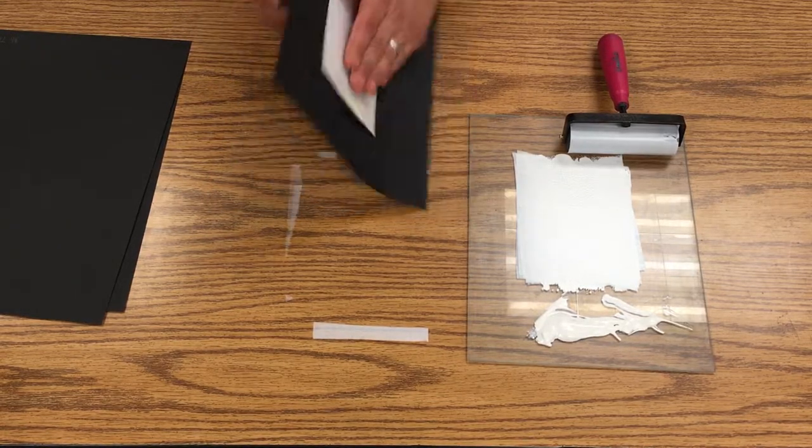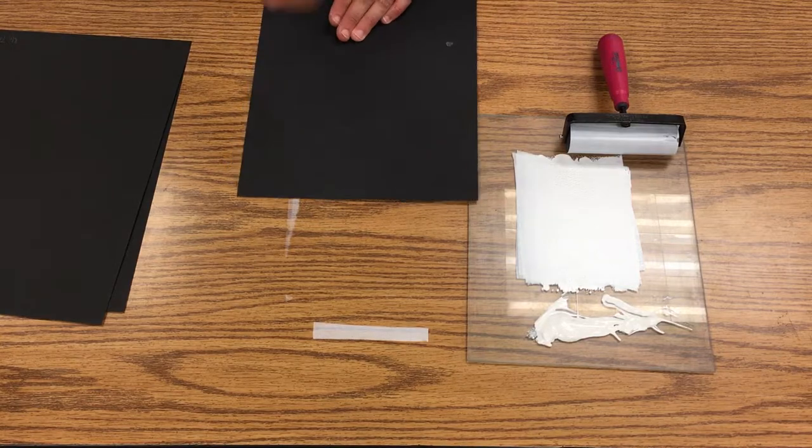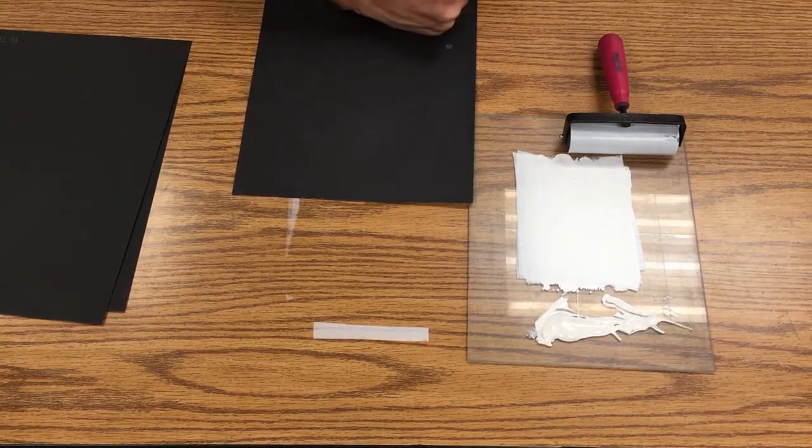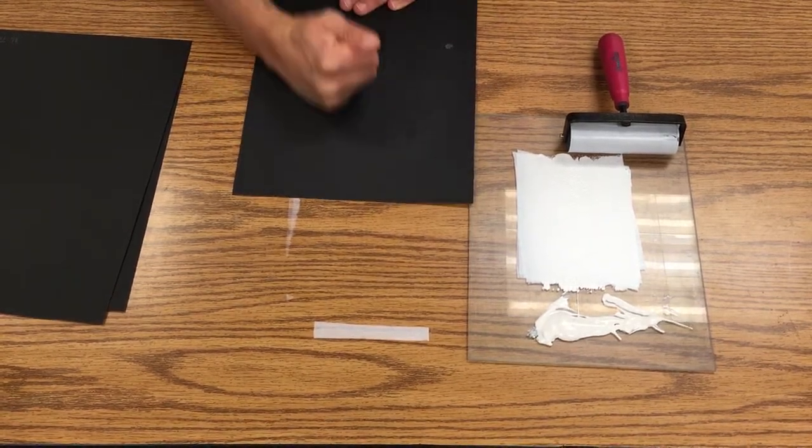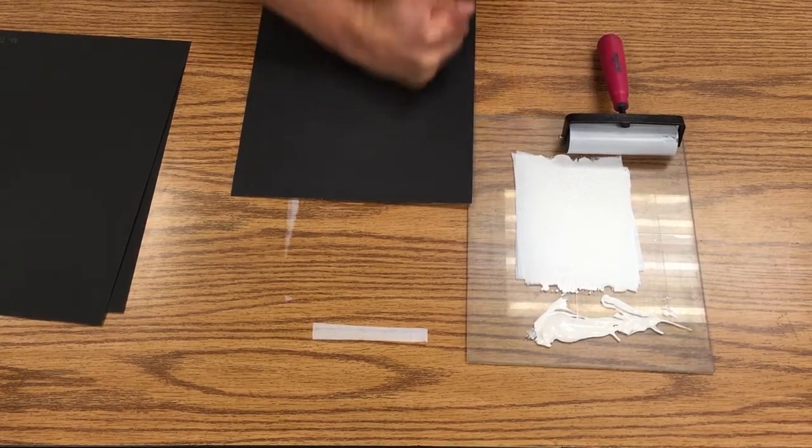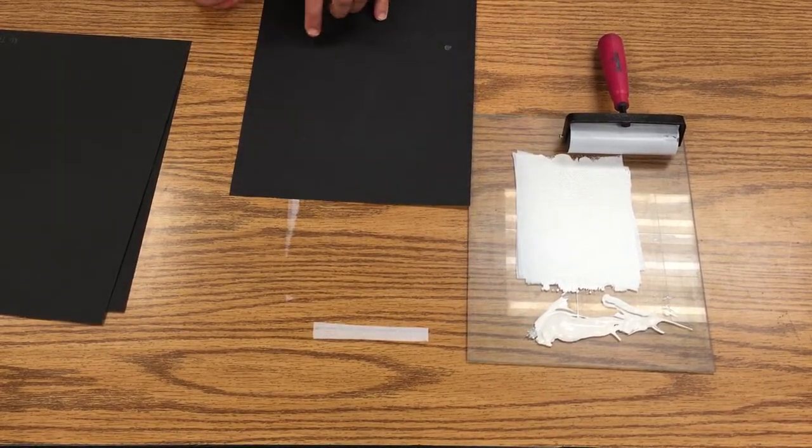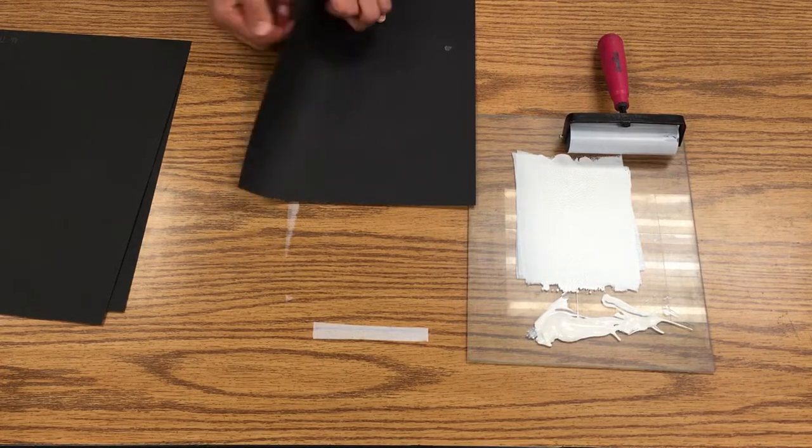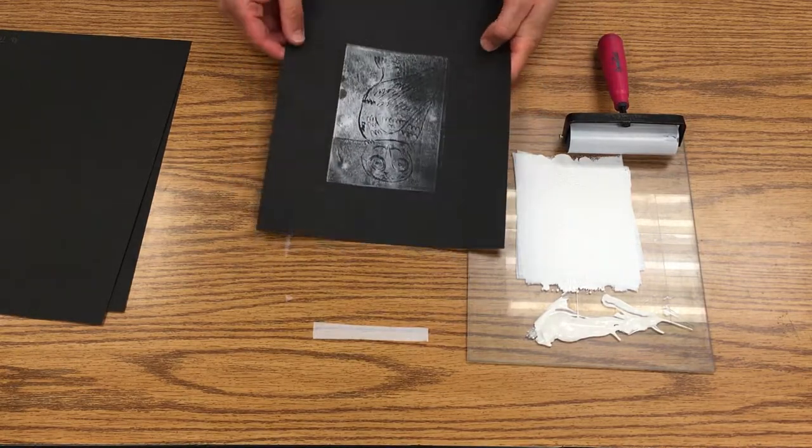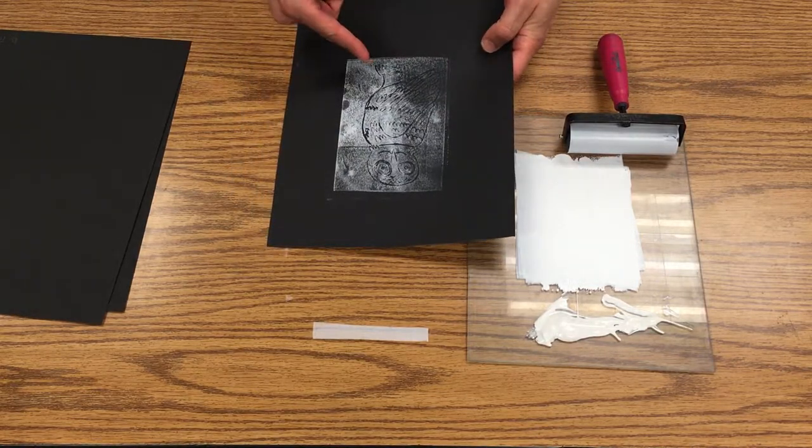Then I want to turn this over and use the side of my hand to add pressure to the printing plate. Then I can peel this away and see that the image has transferred.